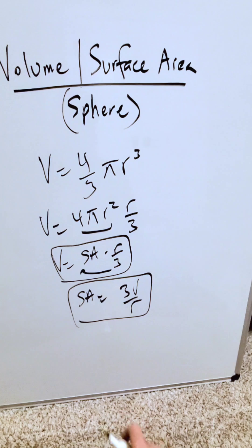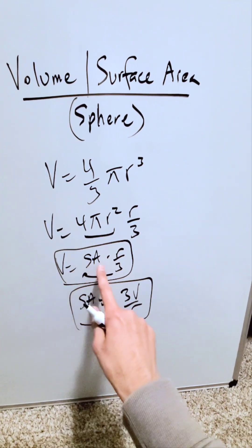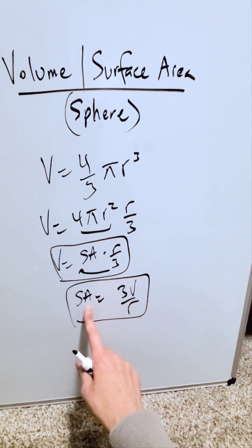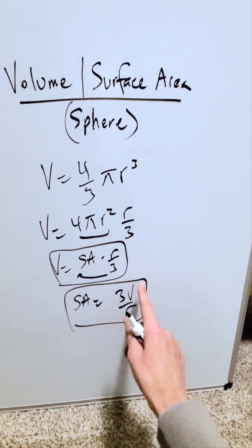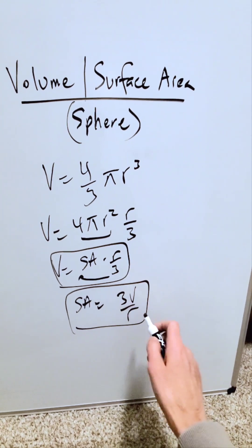You're seeing yet another relationship develop. You have hidden relationship over here. Volume of a sphere is always equal to surface area times a third of its radius. Likewise, surface area of a sphere is always equal to 3 times the volume divided by its radius.